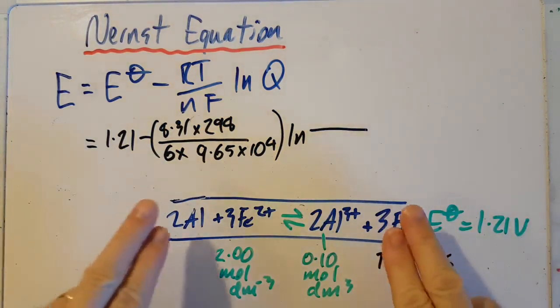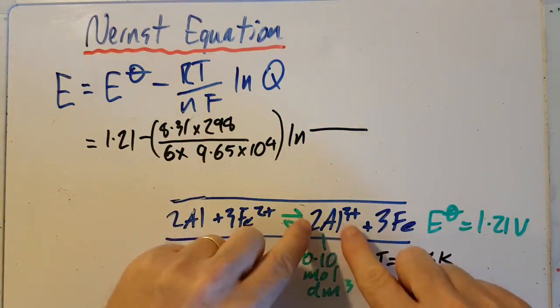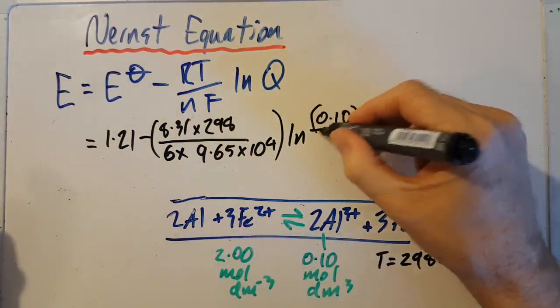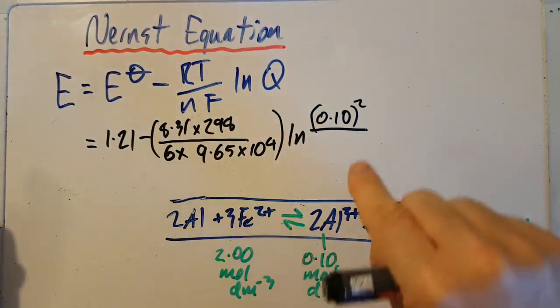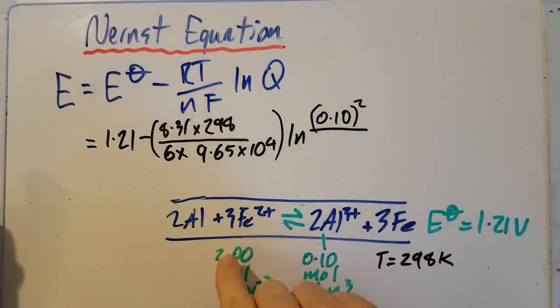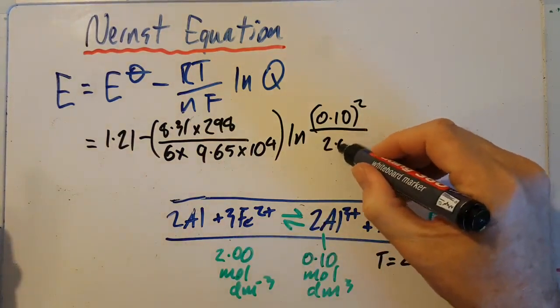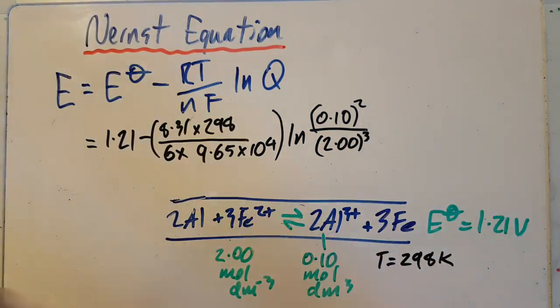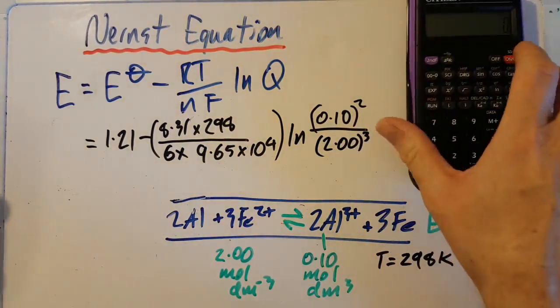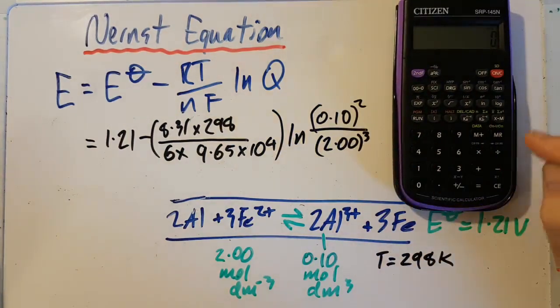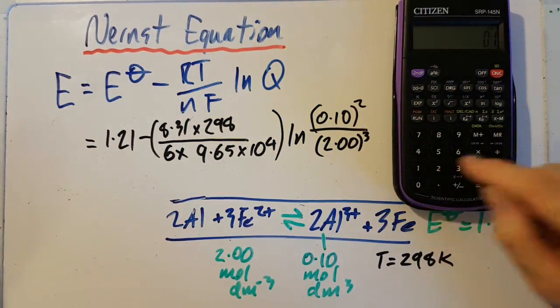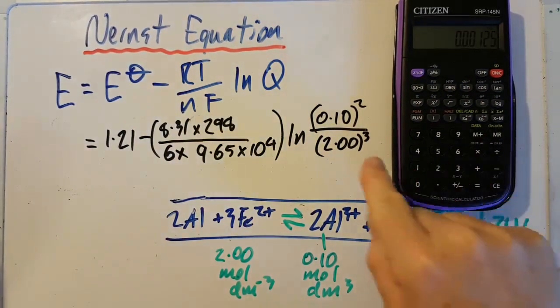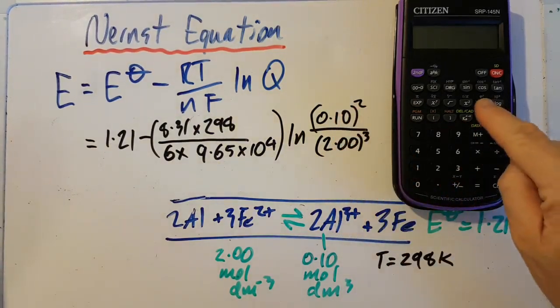Faraday's constant is 9.65 times 10 to the 4. So that's going to be the concentration of that, 0.10 squared. Don't forget the coefficient becomes the exponent. Divided by the reactants, which is going to be 2.00 cubed. All right, let's have a go. OK, let's do the calculation then.